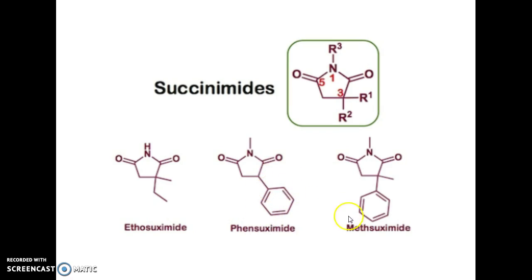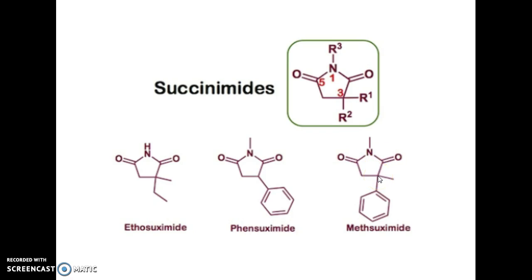And lastly, for methsuximide, it is almost similar to phensuximide. At position 1, there is also an N-methylated group. But at position 3, the hydrogen group has been replaced with a methyl group.